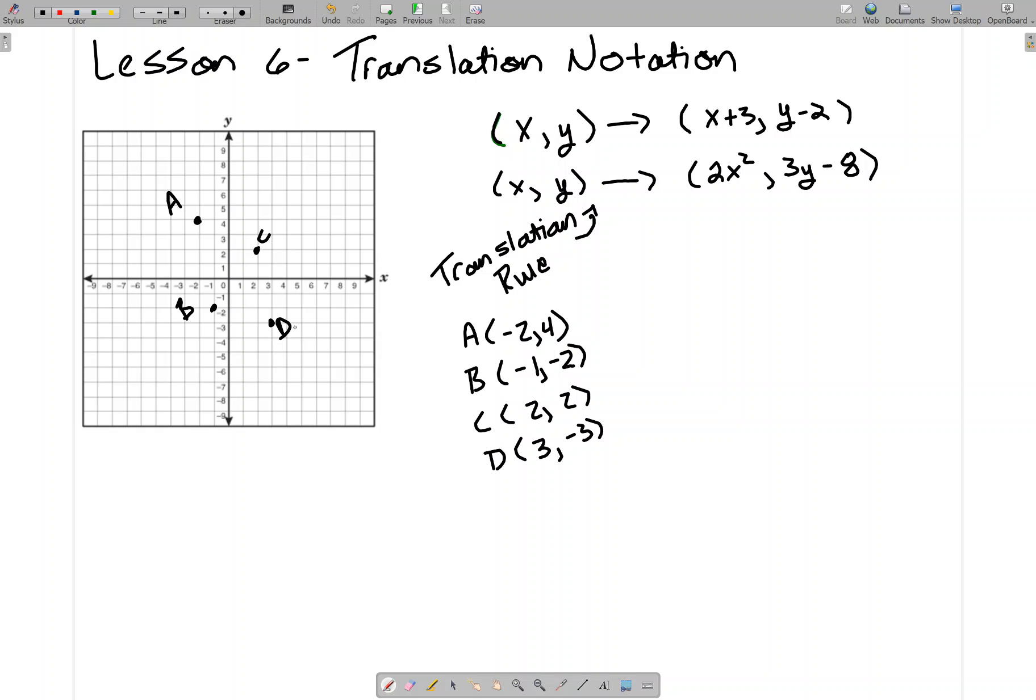Now I'm going to use a Translation Rule to change these points. The Translation Rule I'm going to use is X, Y changes to 2X, Y plus 1. What that means is when I'm finding where each coordinate goes, I'm going to use their X and Y values in this rule as if it's a formula.